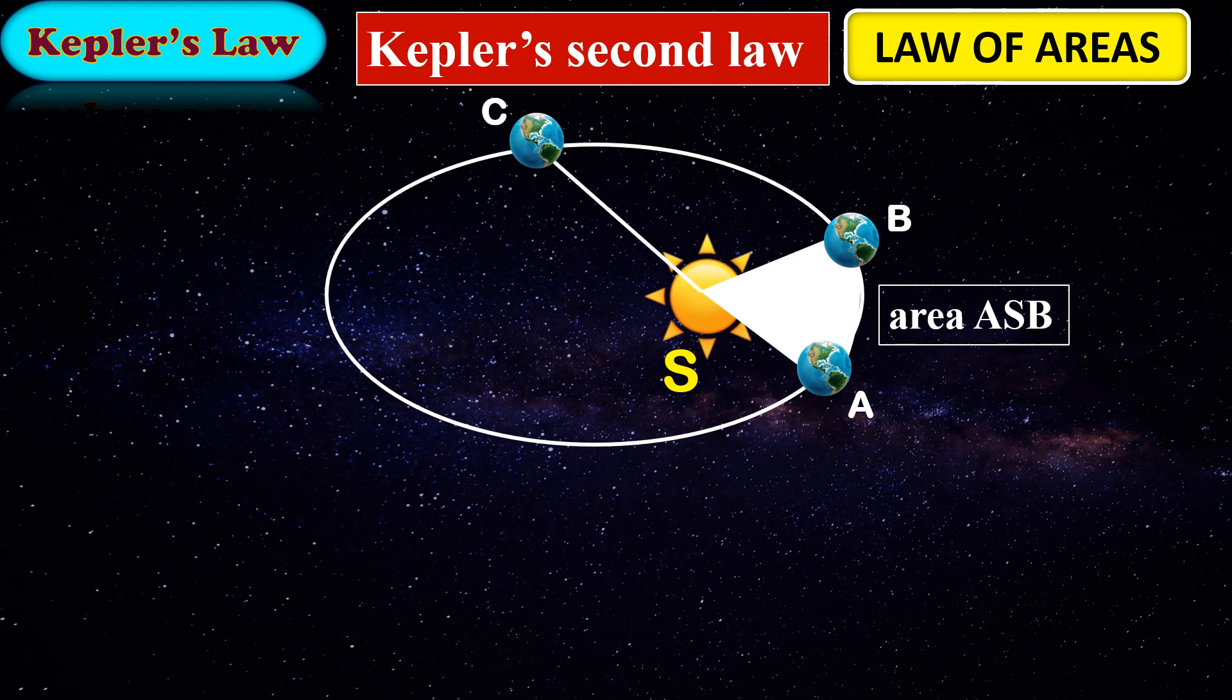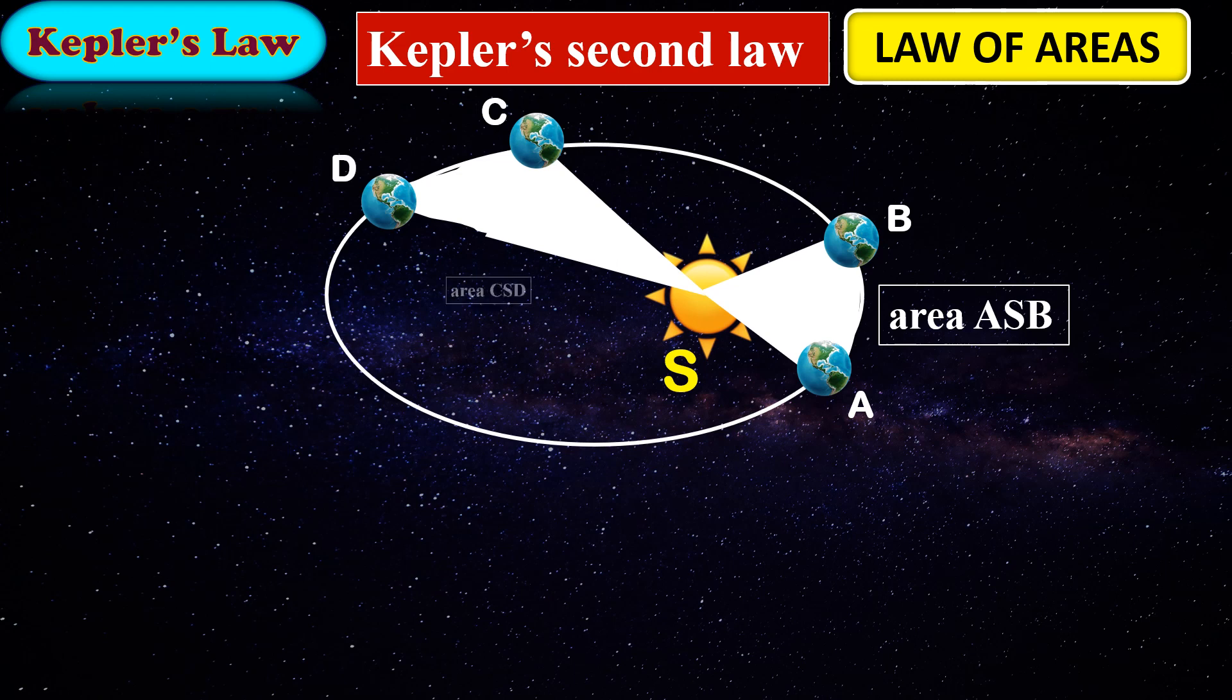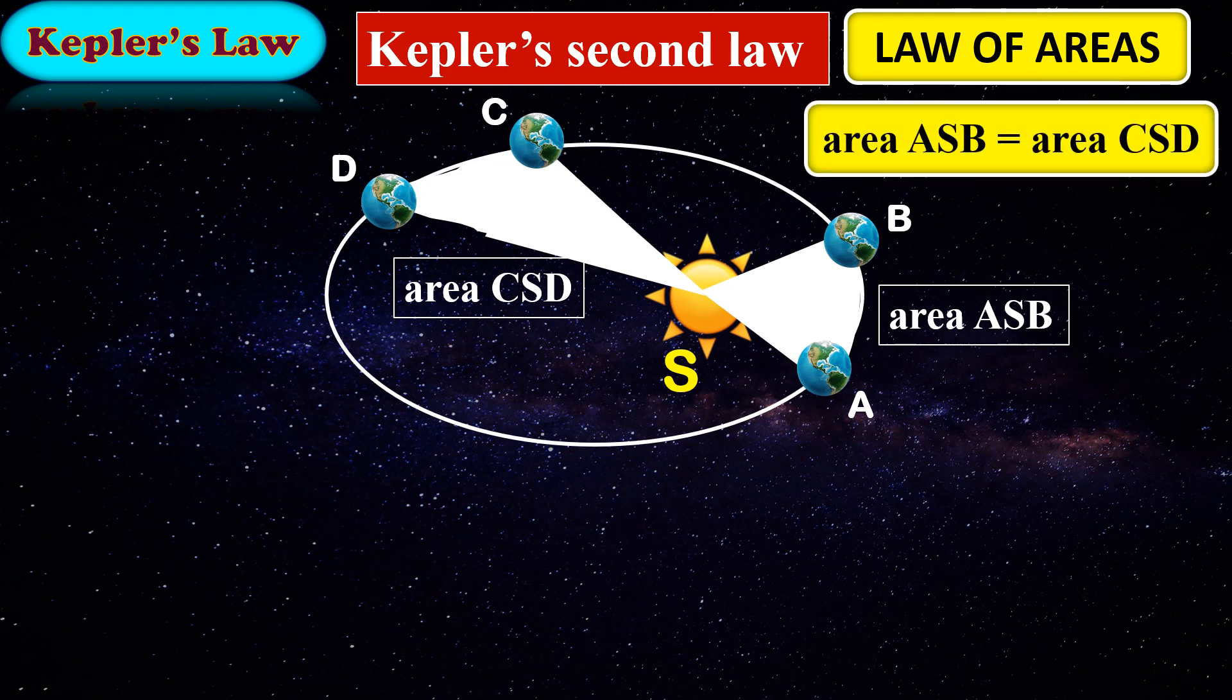Also, consider a line joining from sun to the Earth at position C. Again, we will assume that Earth from position C sweeps to D in one month. Thus, the area covered will be C-S-D. Hence, area A-S-B is equal to area C-S-D.